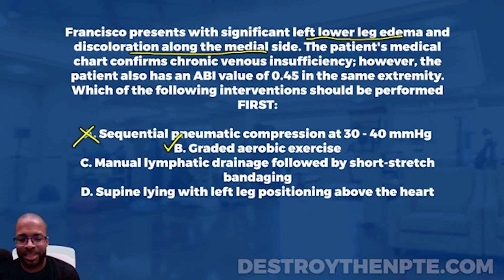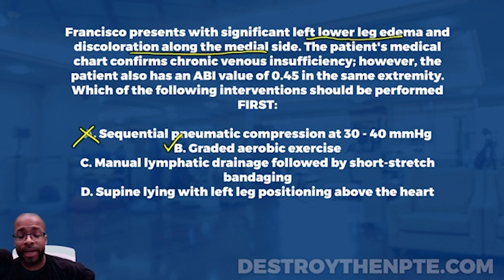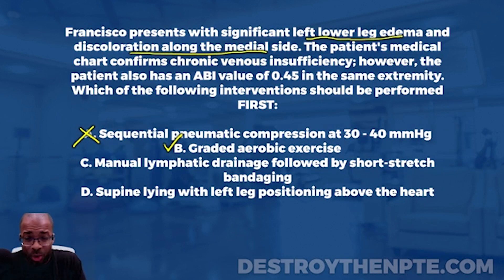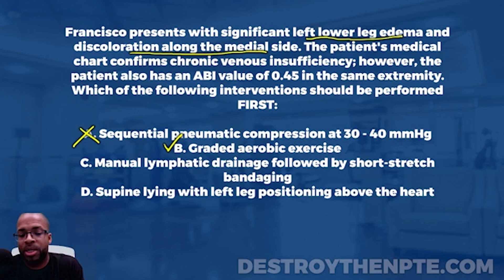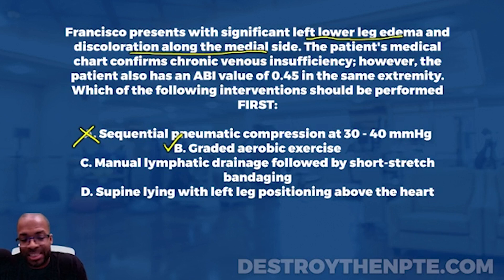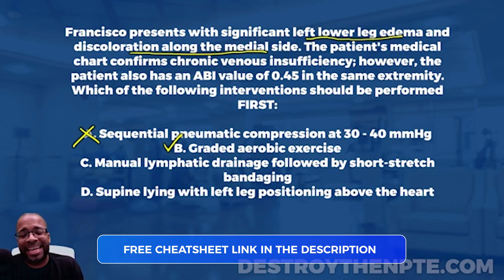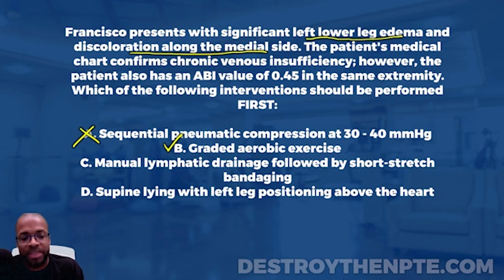Answer C is manual lymphatic drainage followed by short stretch bandaging. Manual lymphatic drainage is typically used for lymphedema and can also be used for venous insufficiency, but it's really not used for arterial insufficiency. Back to our principle: if both venous and arterial insufficiency are present in the same extremity, go after the most severe — which is arterial. So C can't be right because it addresses venous insufficiency, not arterial. Also, short stretch bandaging is a form of compression, which is contraindicated with severe arterial disease. Eliminate C.